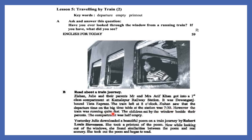However, the train was running quite fast. The children sat by the window beside their parents. The compartment was half empty. Yesterday, Julie downloaded a beautiful poem on a train journey by Robert Louis Stevenson and took a printout of the poem. Now, while looking out of the windows, she found similarities between the poem and the real scenery. She took out the poem and began to read. This is basically a story about the train journey of Jishan and Julie.